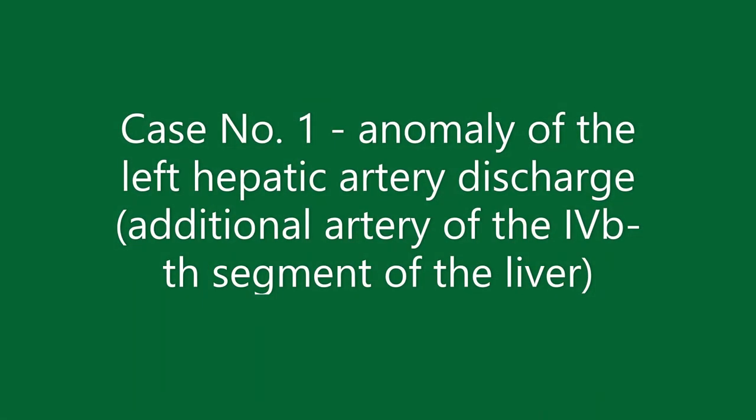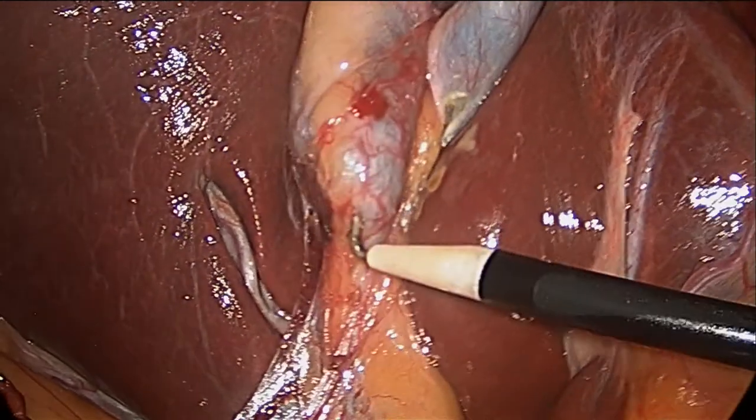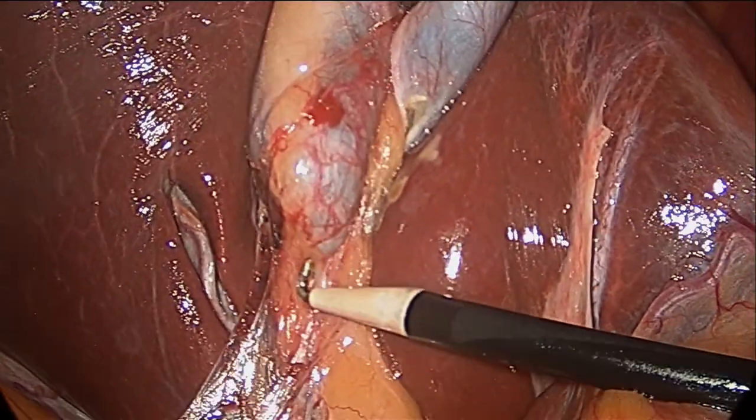Case number one: anomaly of the left hepatic artery discharge, or additional artery of the fourth B segment of the liver.